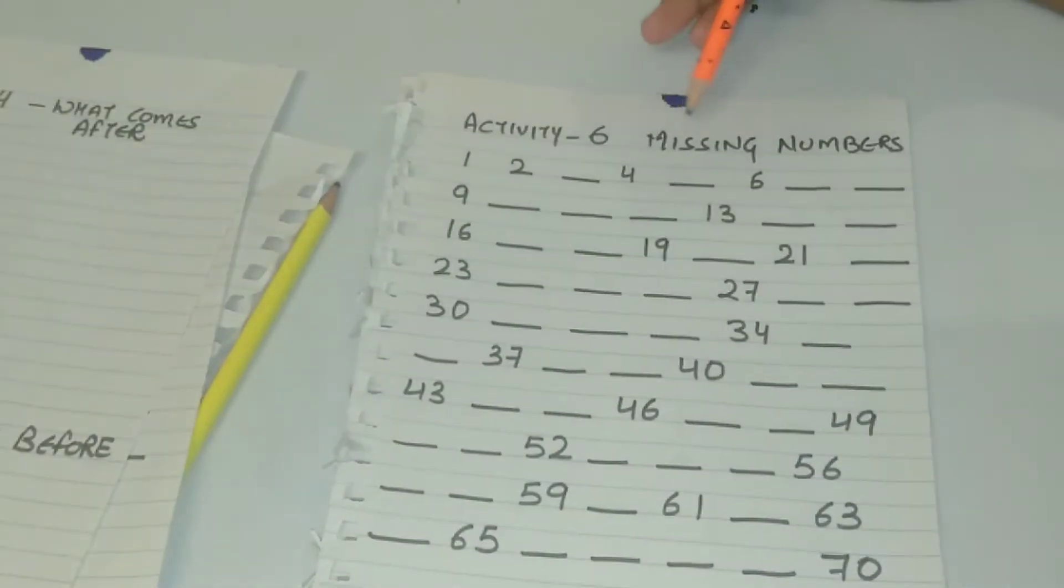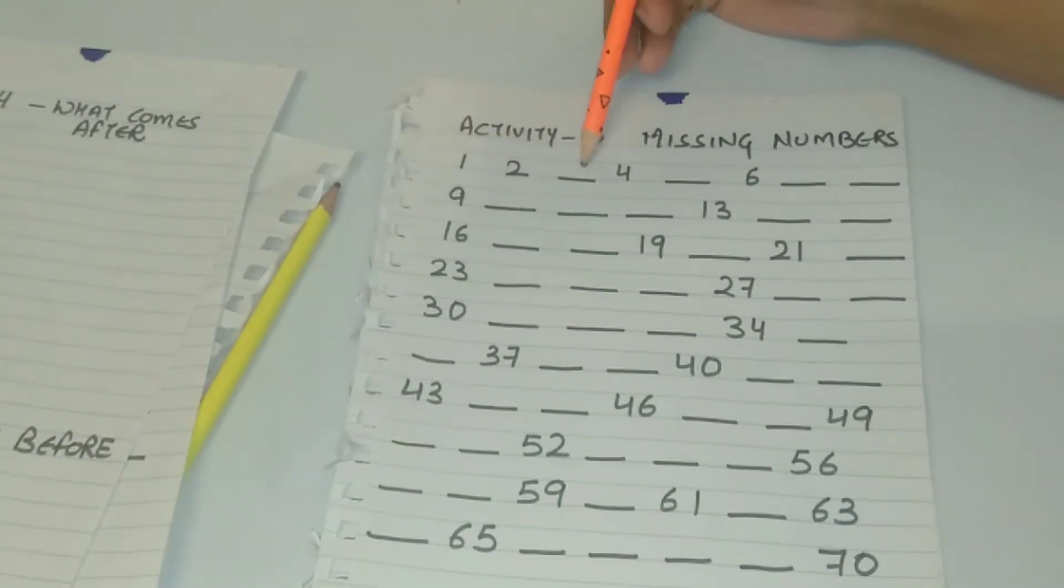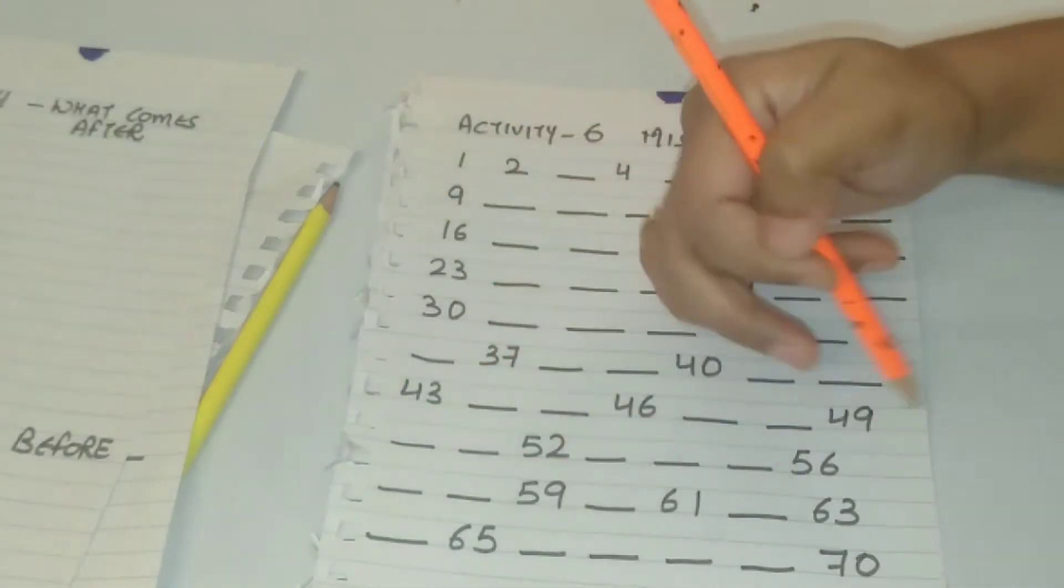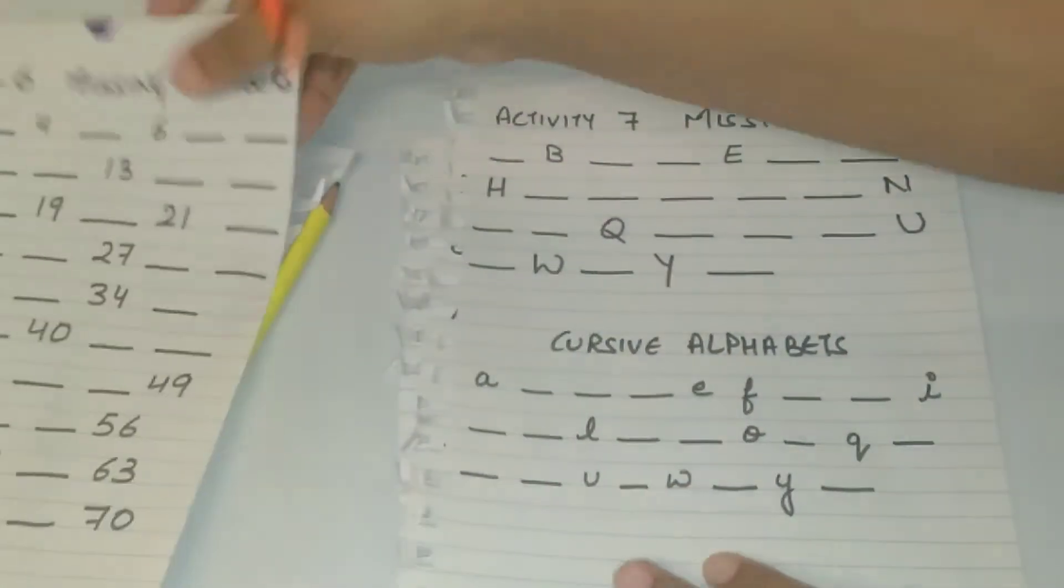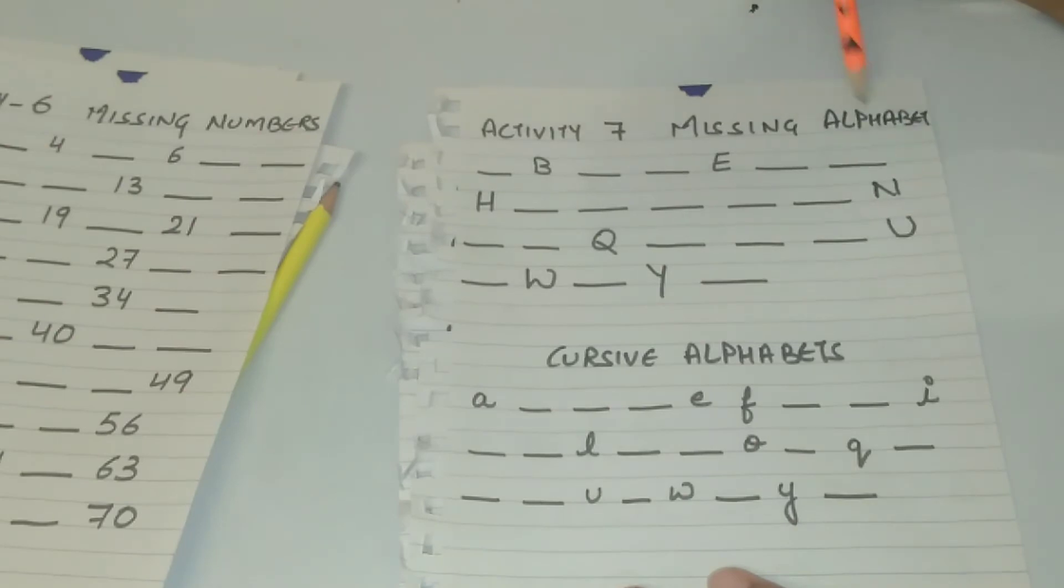Another activity is missing numbers. This is specifically for those kids who don't want to write at all. Like my daughter, she is in a phase where she doesn't want to write. So I make an activity sheet like this, where I put some numbers and ask her to put the missing number. She does it.